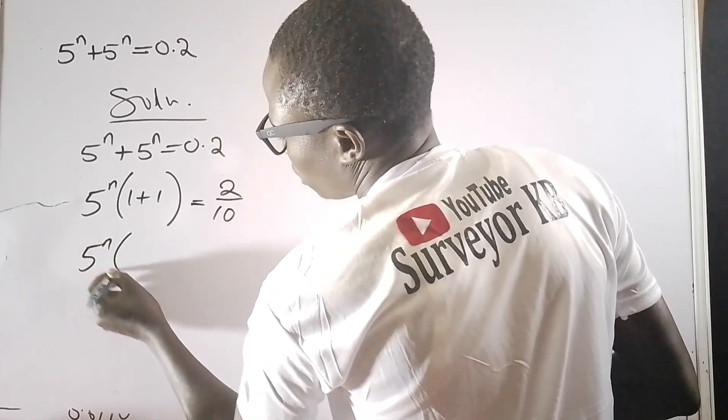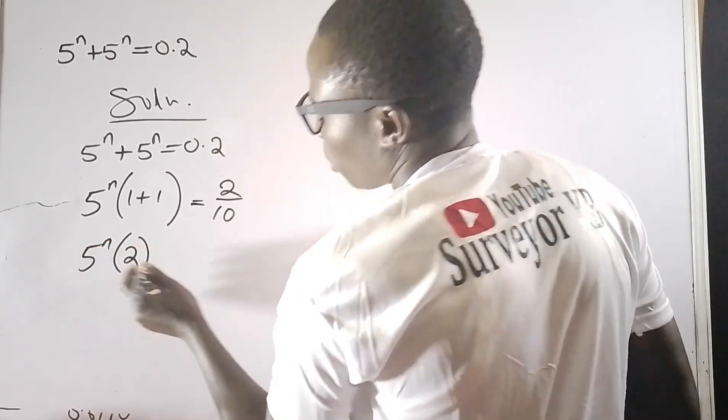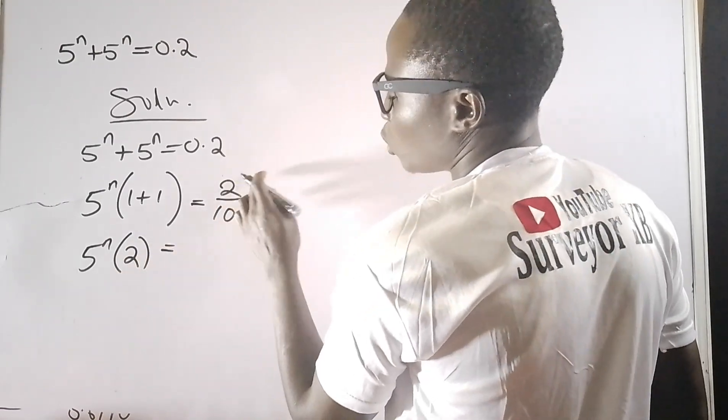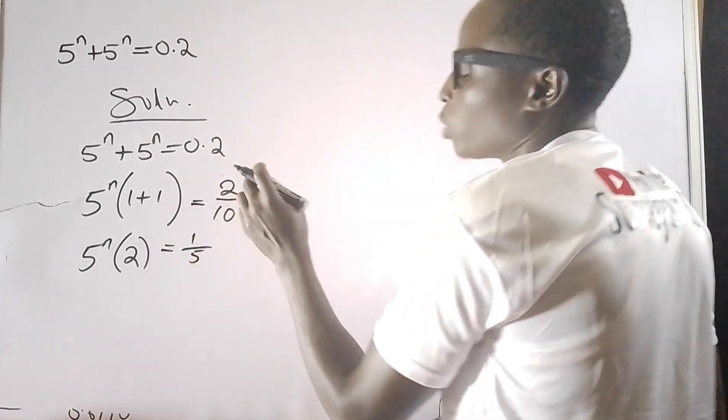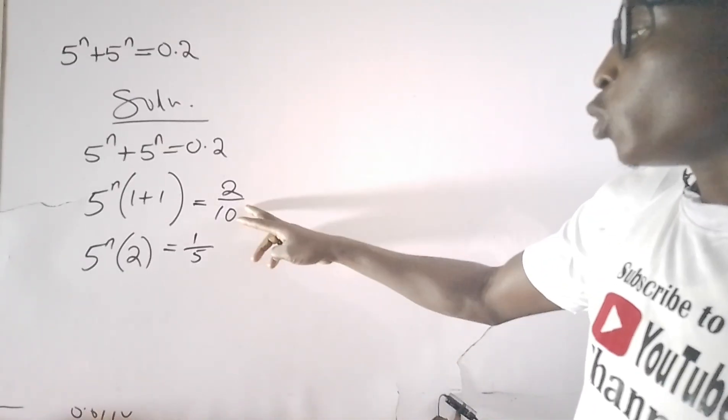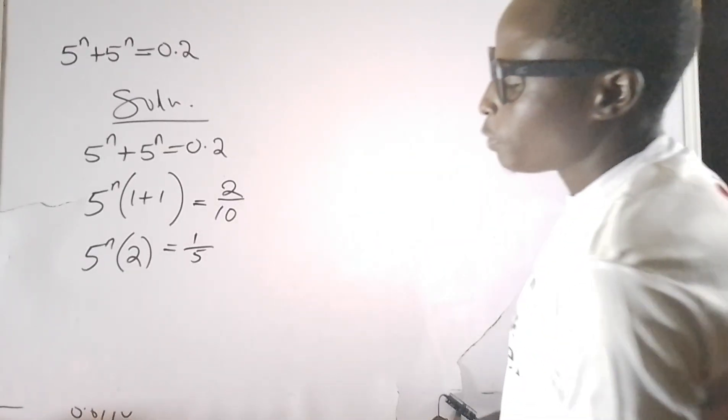2 over 10 is 1 over 5, because 2 can go into 2 once, and 2 can go into 10 five times.